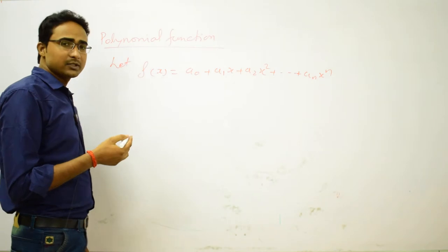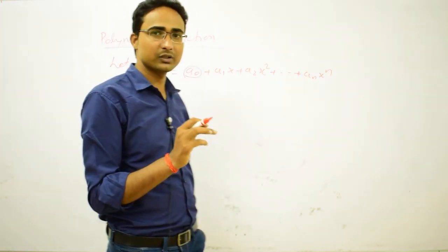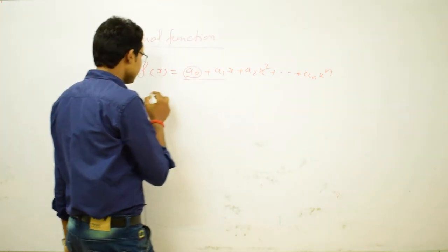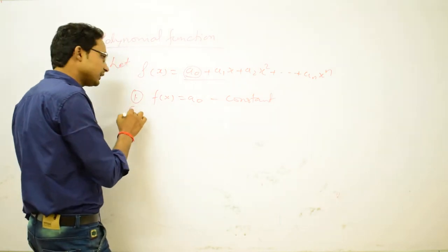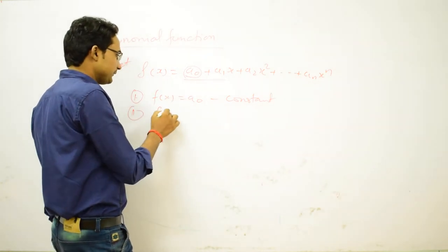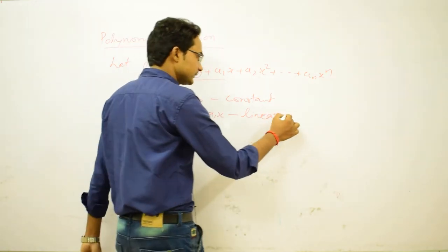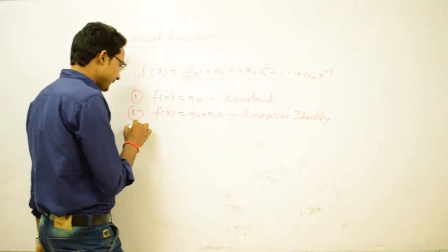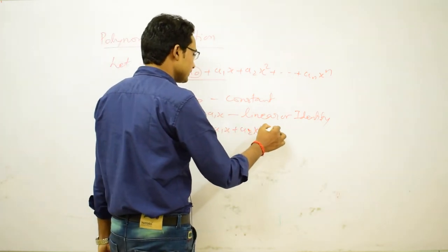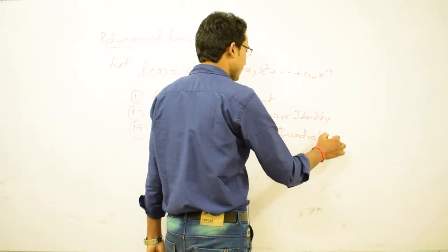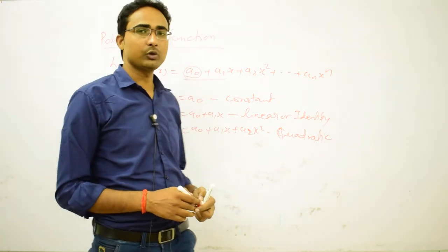There are several types of polynomial functions. If f(x) = a₀, this is a constant function. If we take two terms, f(x) = a₀ + a₁x, this represents a linear or identity function. With three terms, f(x) = a₀ + a₁x + a₂x², this is a quadratic polynomial. After that comes cubic and so on.